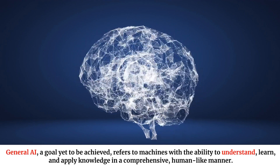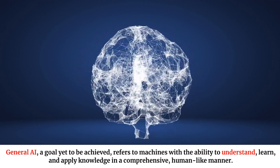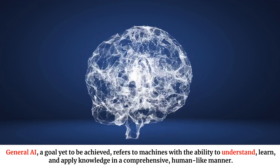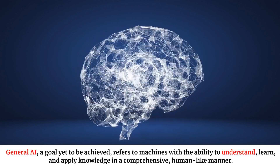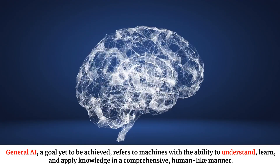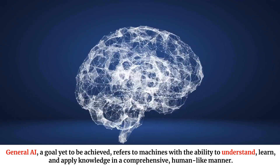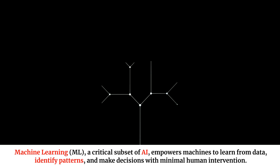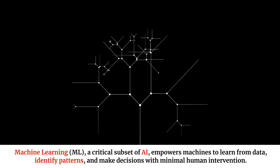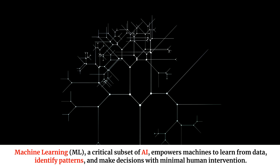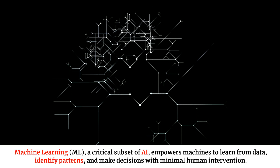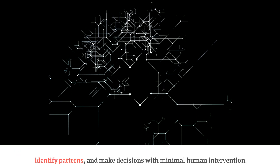General AI, a goal yet to be achieved, refers to machines with the ability to understand, learn, and apply knowledge in a comprehensive, human-like manner. Machine Learning, ML, a critical subset of AI, empowers machines to learn from data, identify patterns, and make decisions with minimal human intervention.